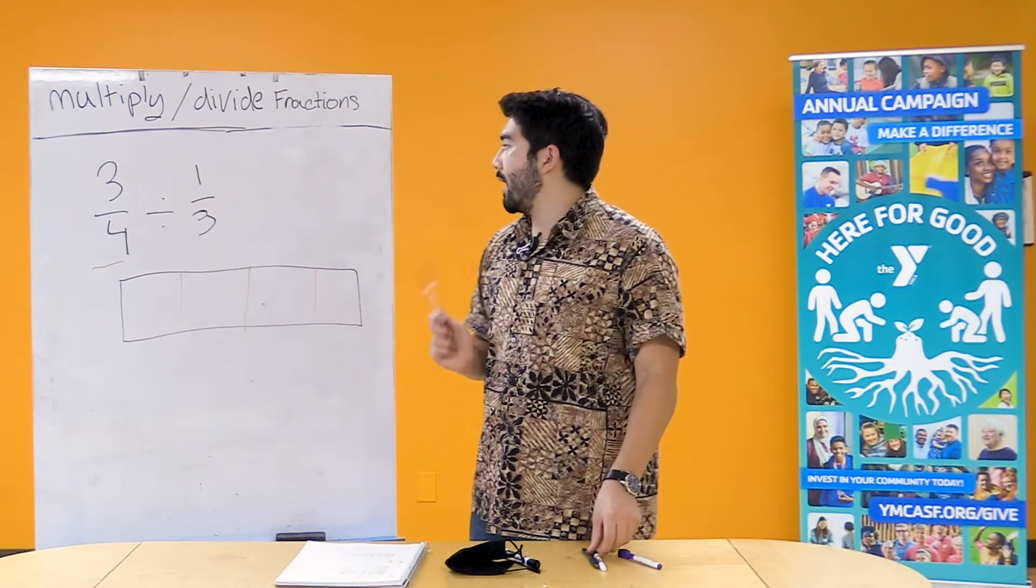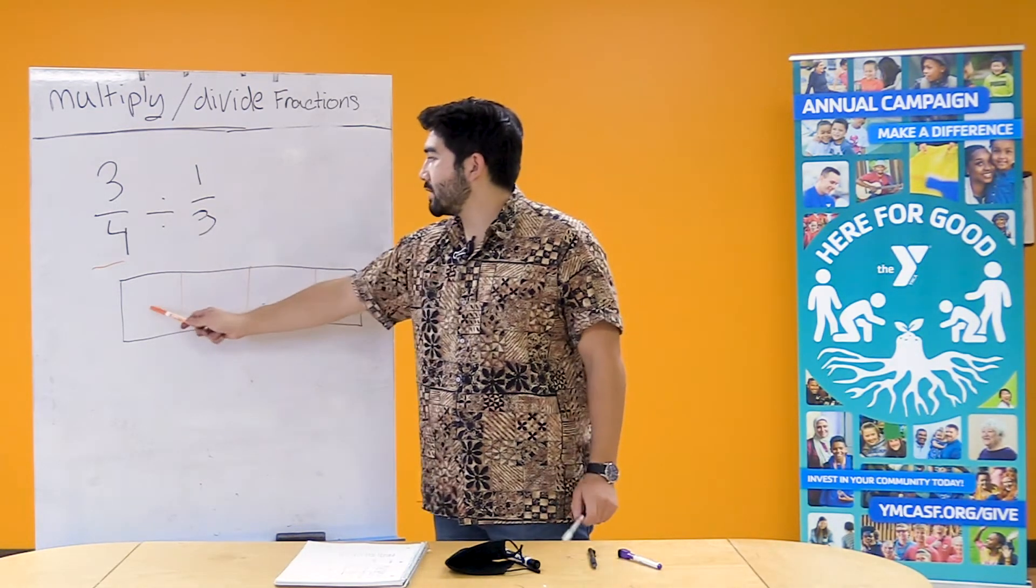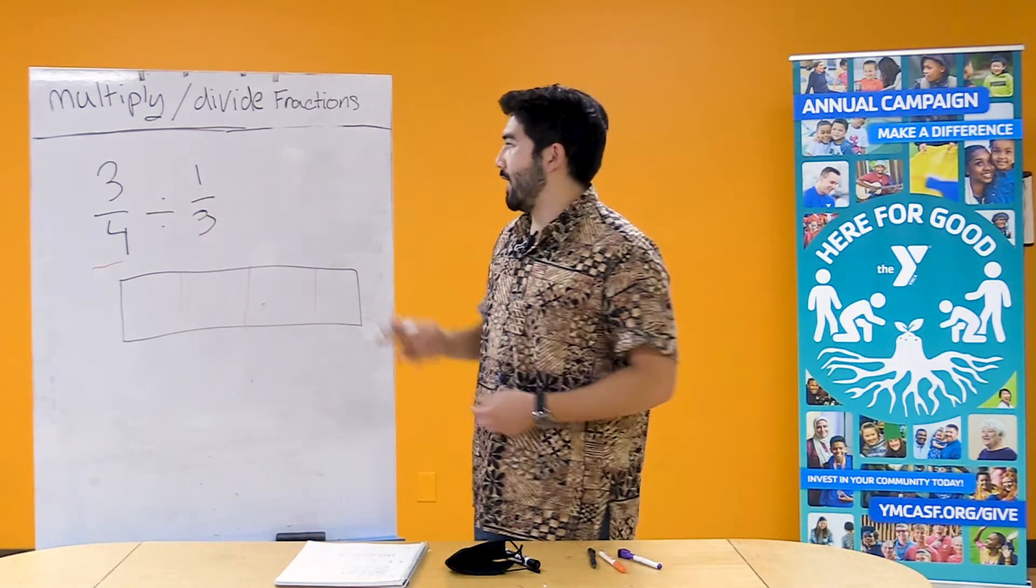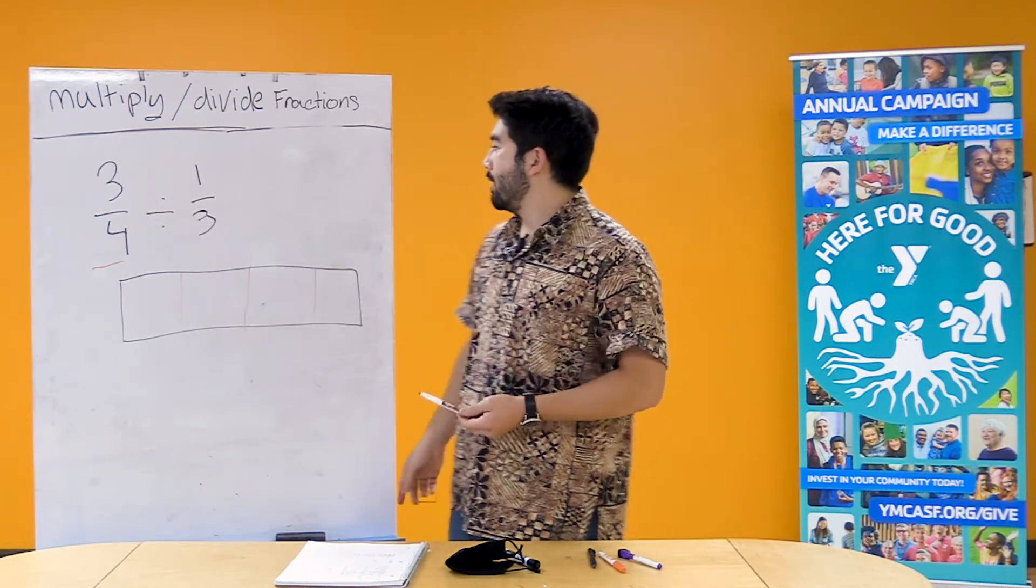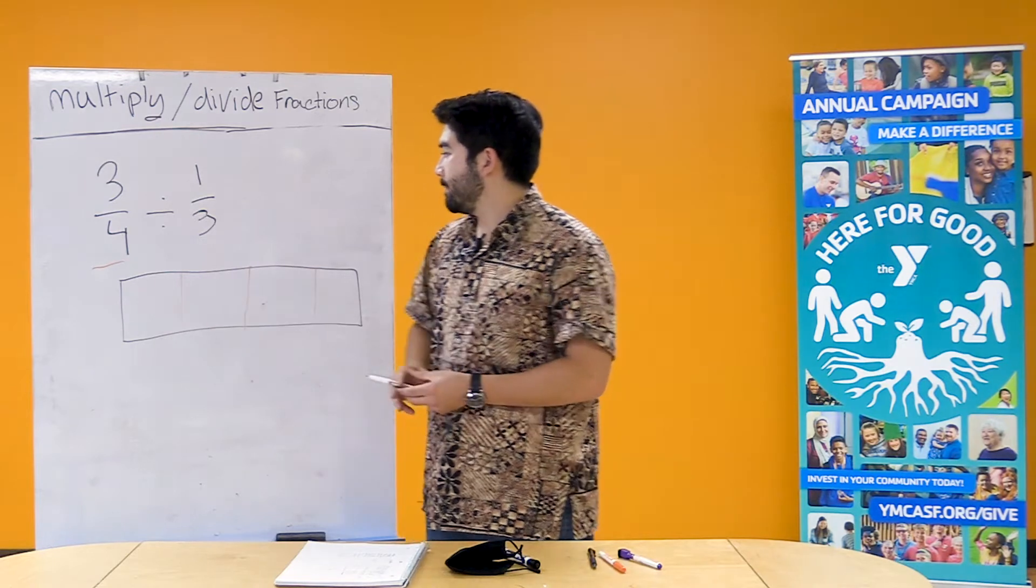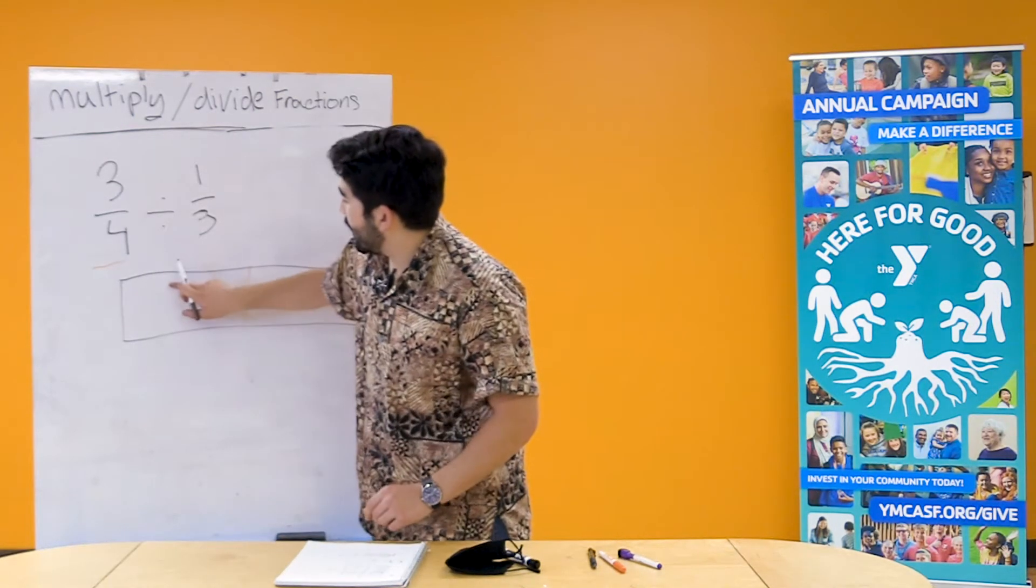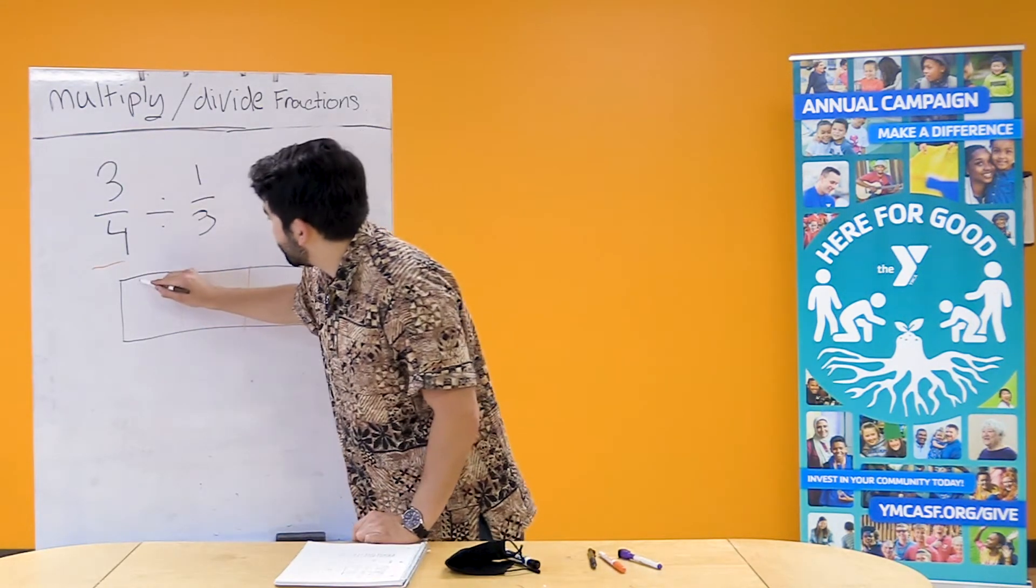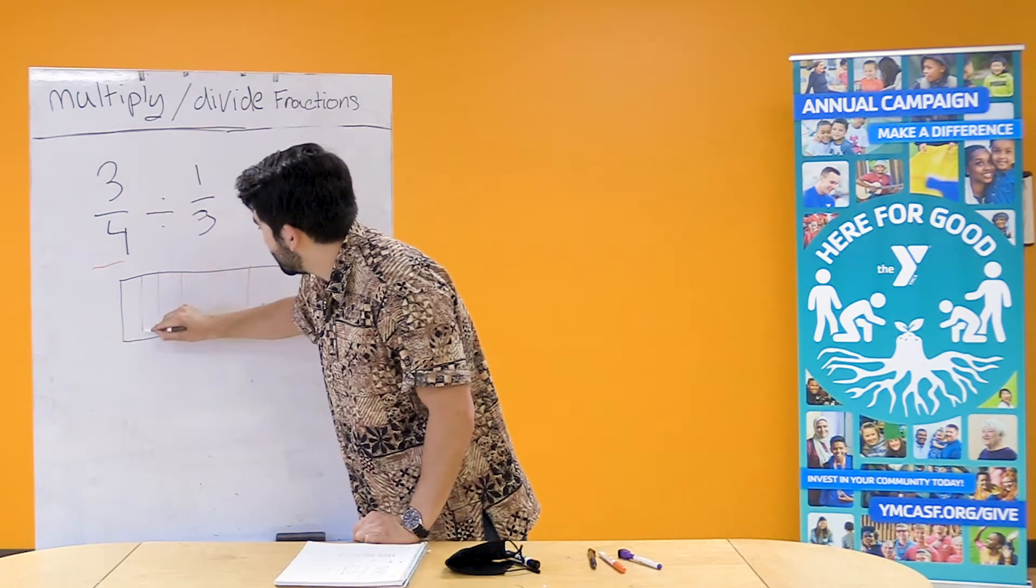From here what I need to do is break our fourths into thirds. Since we are dividing fractions we need to break our fourths into thirds. So this box represents one fourth. So let's break that into thirds. Okay.